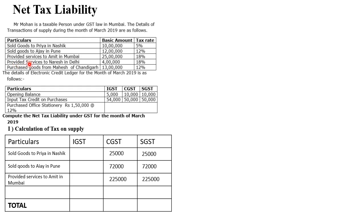Next, provided services to Naresh in Delhi. Delhi and Mumbai are two different states, so whatever tax is charged will come under IGST. 4 lakhs at 18% comes to 72,000.